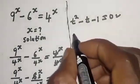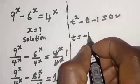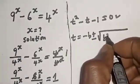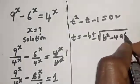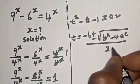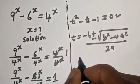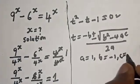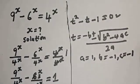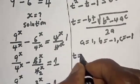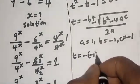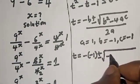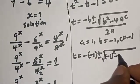Our quadratic formula is t equals negative b plus or minus square root of b squared minus 4ac, all over 2a. From the equation t squared minus t minus 1 equals 0, we identify a equals 1 and b equals negative 1.